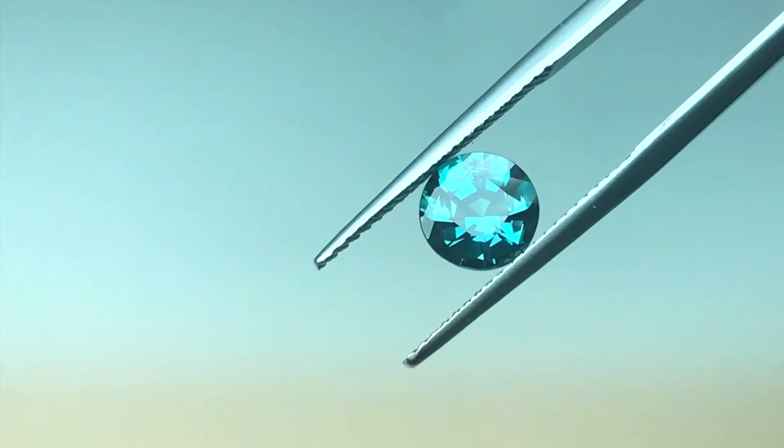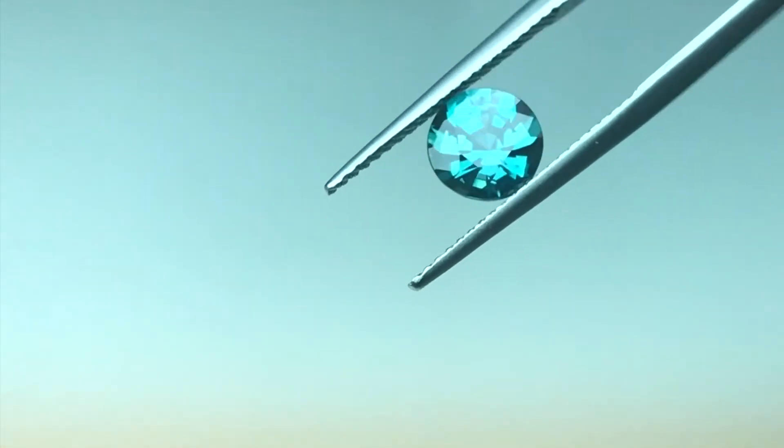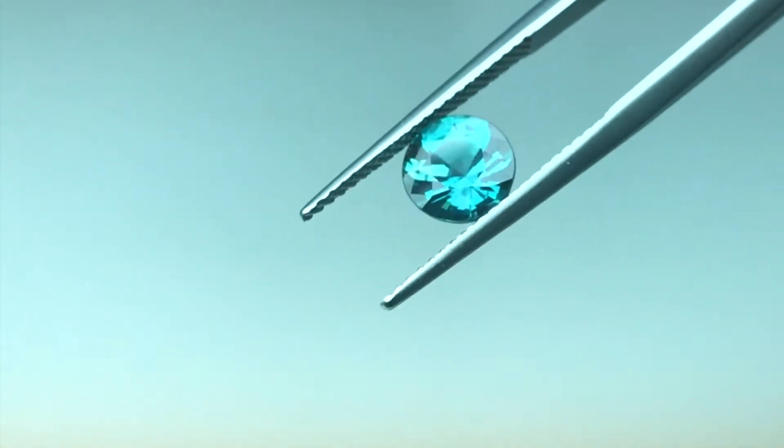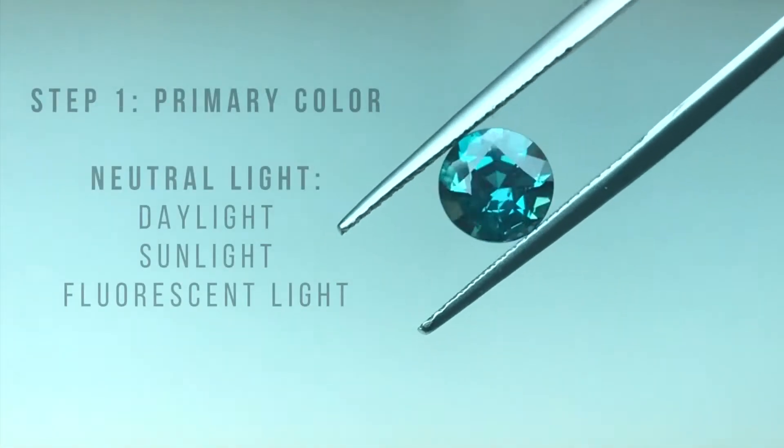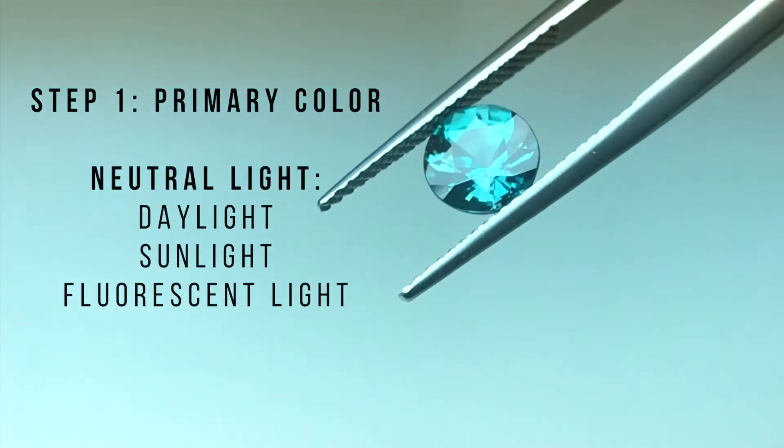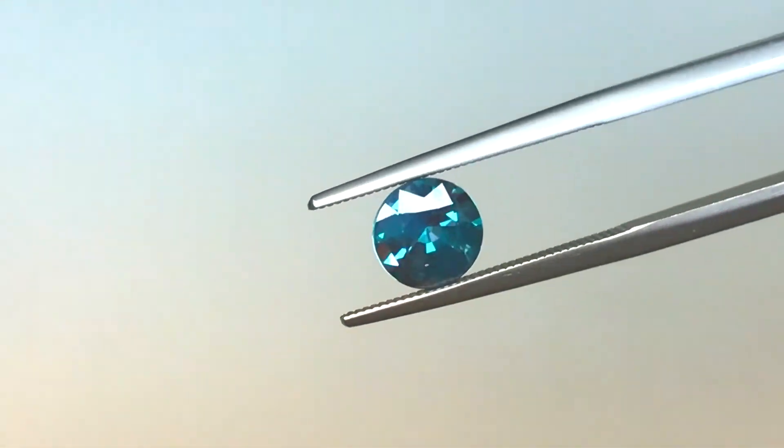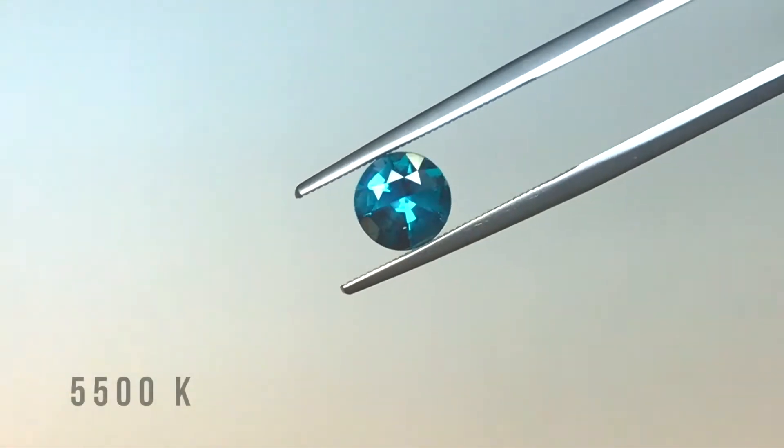The ideal way of looking at alexandrite is to first take the stone under a neutral light setting to see the primary color. By neutral light setting, we mean daylight, sunlight, or fluorescent light. The technical strength of this light is the equivalent of 5500 Kelvin.